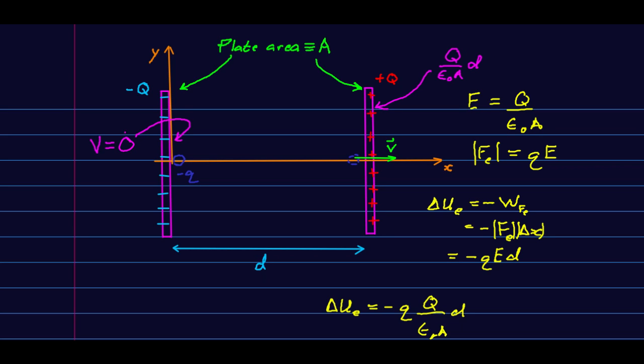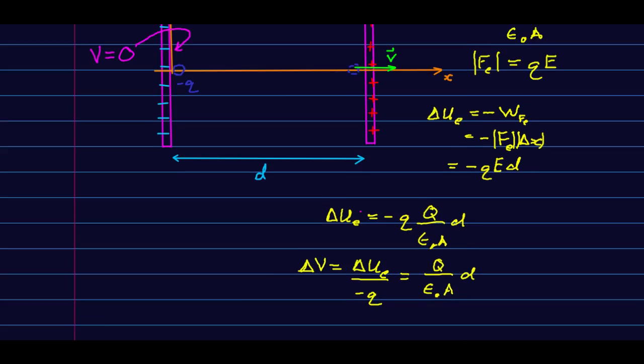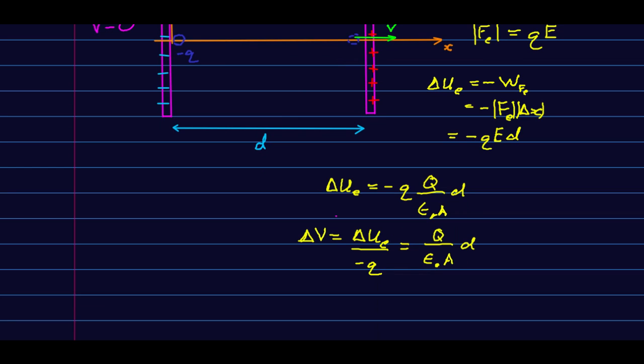But remember, that's arbitrary where zero was. I could just as well have called this one zero, and this one would turn out then to be negative Q over epsilon naught A, d. It's the delta V that we actually know. That's that. We don't have a choice there.